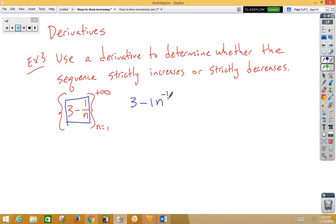When I take the derivative of that using the power rule, I would get 1 n to the negative 2 or 1 over n squared. Well, so if we think about that, that's always going to be a positive number when we do our sign test.